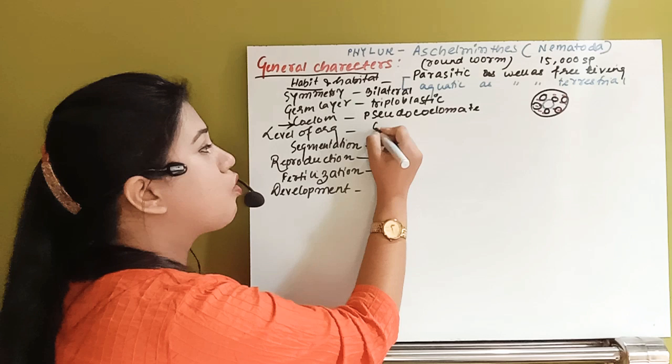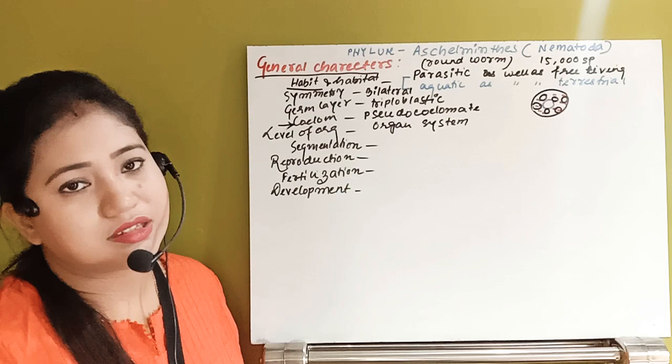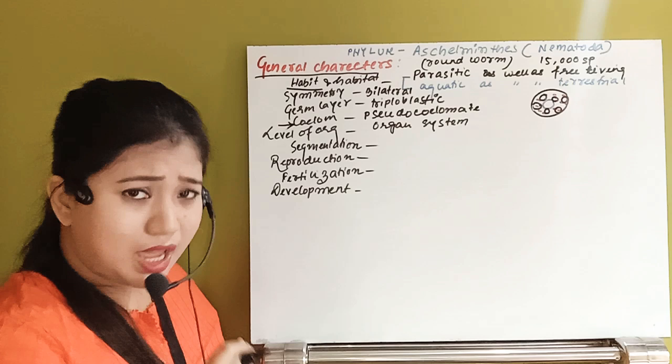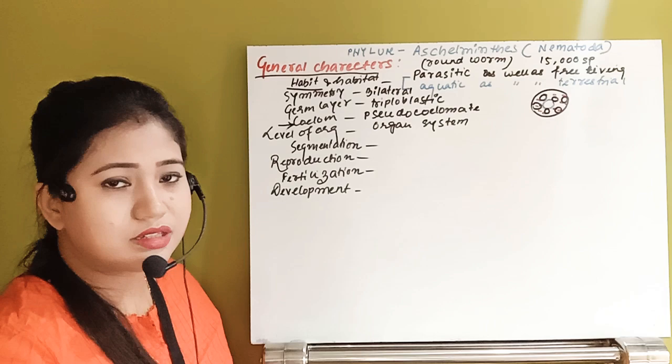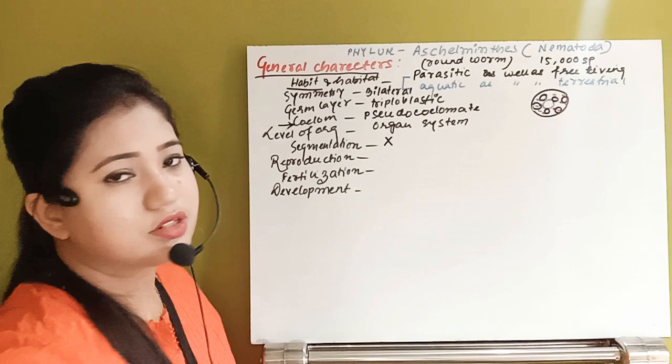The level of organization in Aschelminthes is organ system level — more advanced than in Platyhelminthes. Regarding segmentation, this organism is not segmented at all — no strobilation or false segmentation as seen in flatworms.